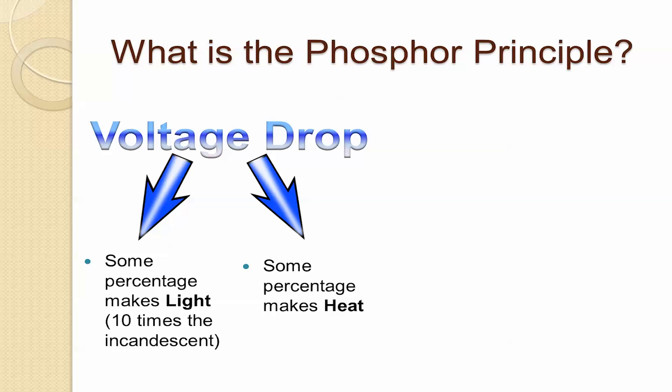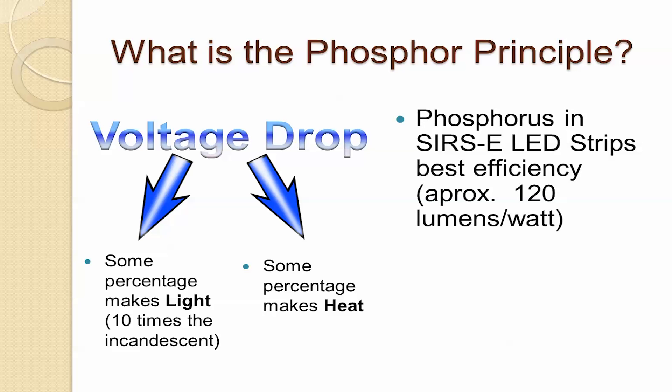The voltage drop in the LED phosphor converts some percentage as light and another percentage as heat. The percentage emitted as light is about ten times more efficient than the incandescent light invented by Thomas Edison over 130 years ago. The phosphor used by Surfs Electronics gives the best efficiency possible.